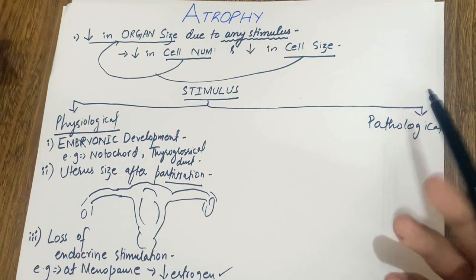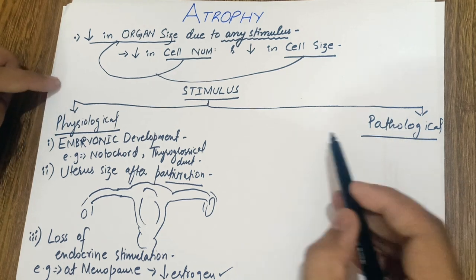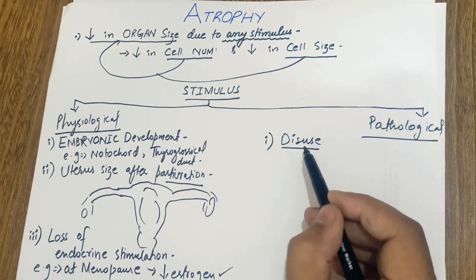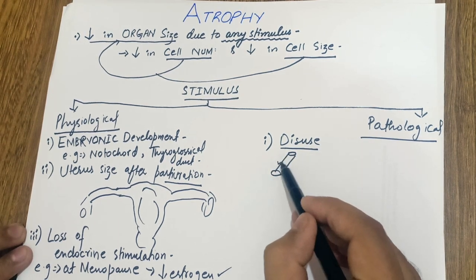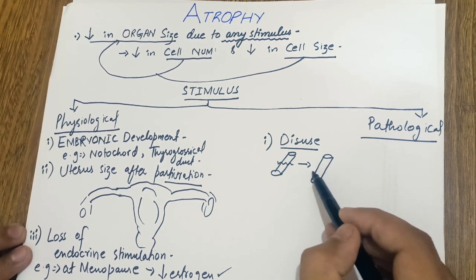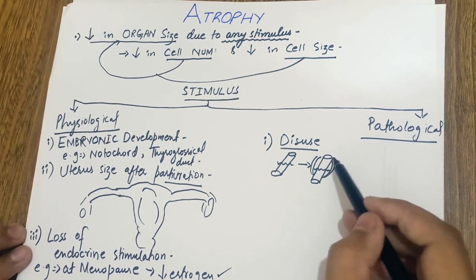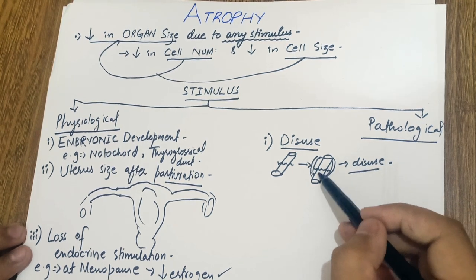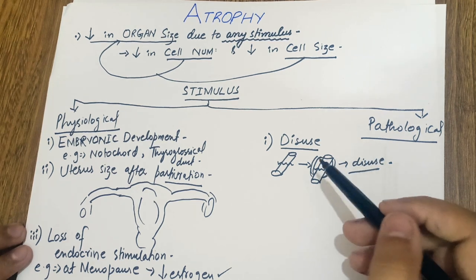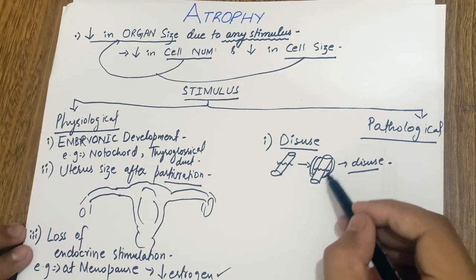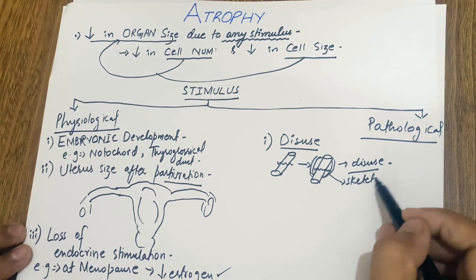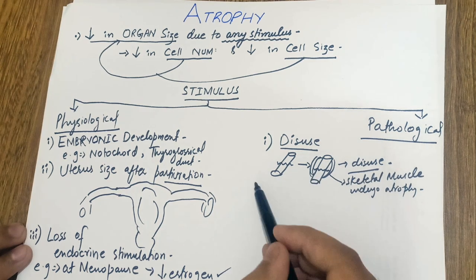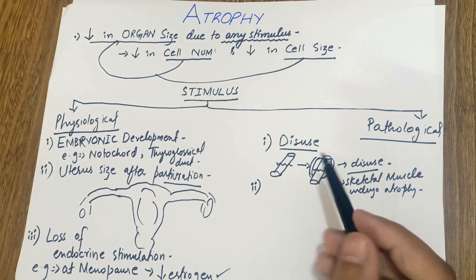Now, what are some pathological causes of atrophy? The first pathological cause is disuse. For example, if a bone undergoes a fracture, the skeletal muscle inserted on that bone undergoes disuse — there is no use of that skeletal muscle until the bone repairs itself. As a result, that skeletal muscle undergoes atrophy. The second pathological stimulus is ischemia.